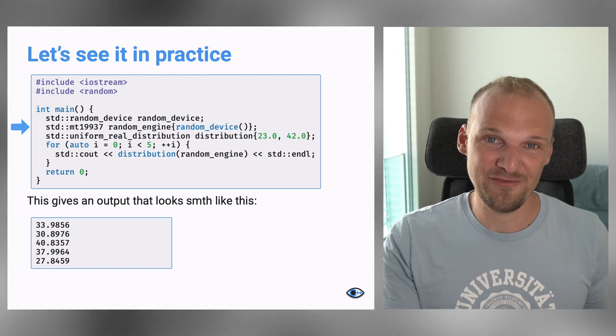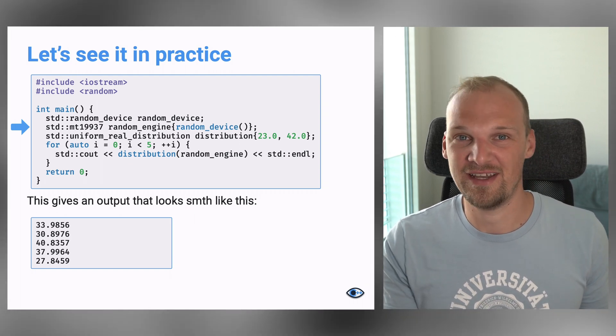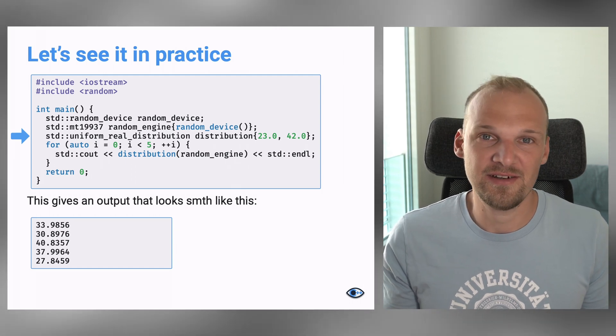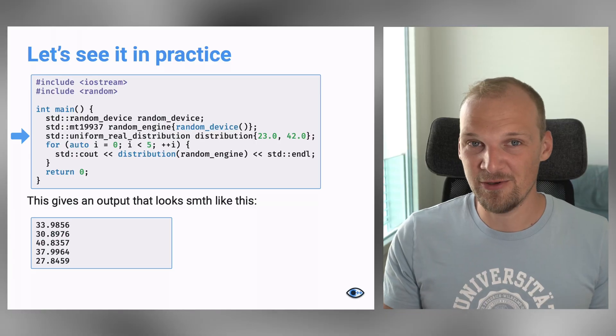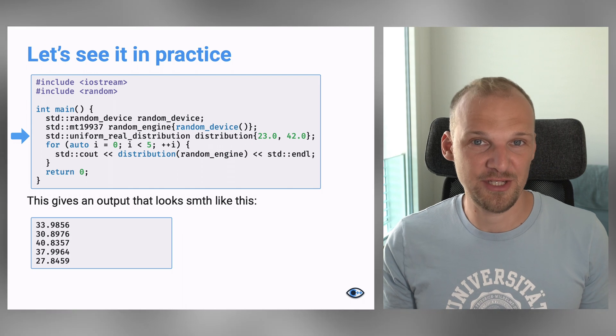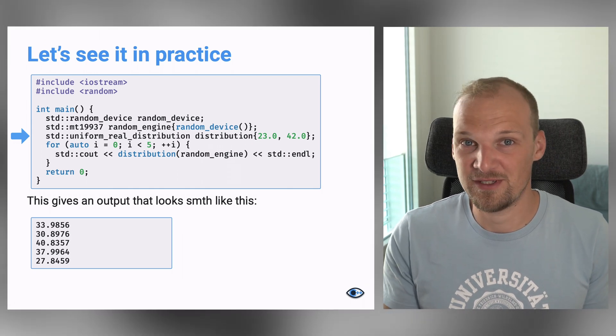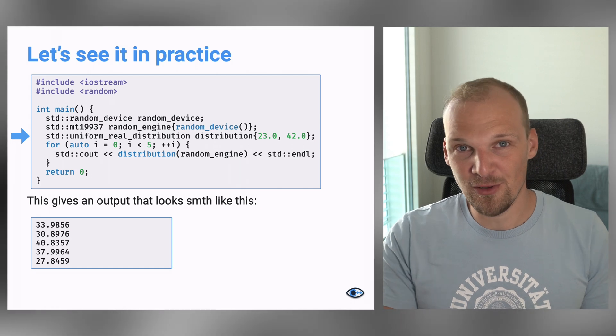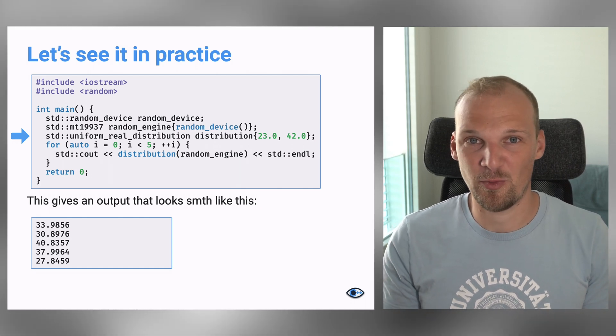And now that we have a random engine at our disposal, we can create a random distribution. And here, let's just create a uniform real distribution. Again, go to cppreference.com to see all the possible ones. So, we want a distribution that generates a random number from 23 to 42, for example. And we want all of the numbers in this range to have equal probability.